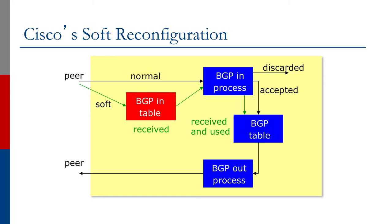Soft Reconfiguration today is very much considered only useful when two network operators are trying to troubleshoot a BGP session between their respective networks. It helps resolve disputes about which prefixes were sent or received, and lets the two operators effectively troubleshoot problems with prefixes being received or sent in a BGP session. Otherwise, if Soft Reconfiguration is not required, it should not be applied, so that operators have access to the Route Refresh capability which is part of the BGP specification.